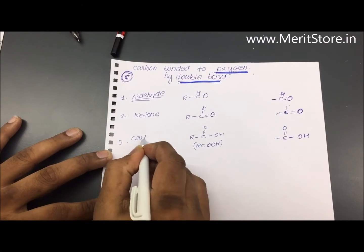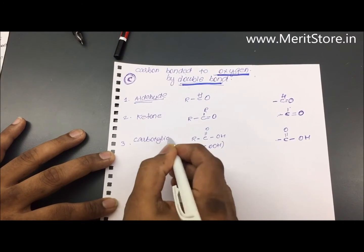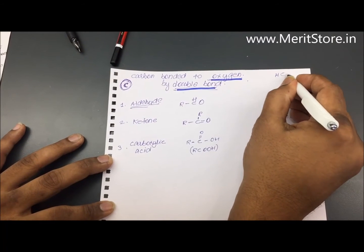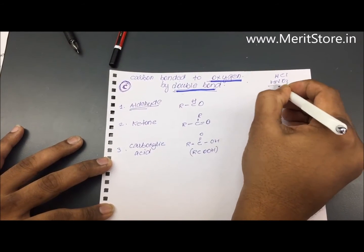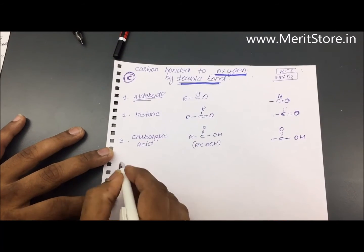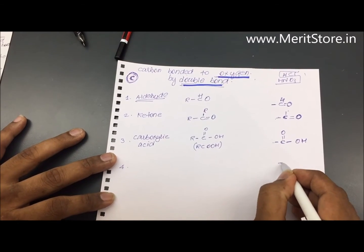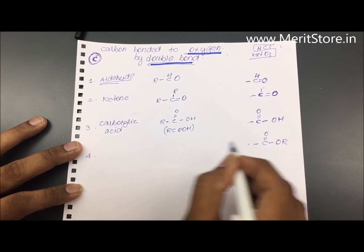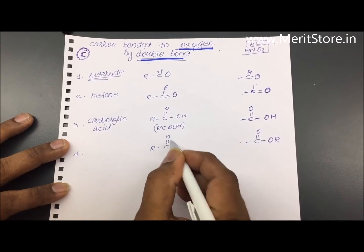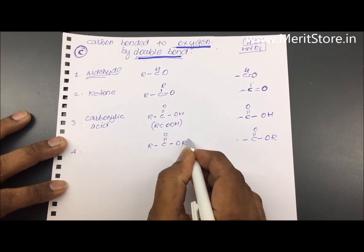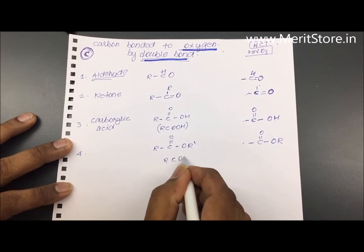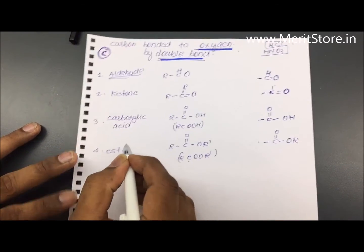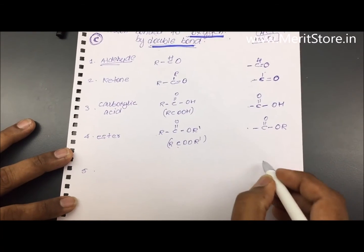We also have carboxylic acid alongside mineral acids. Mineral acids are acids like HCl, HNO3, etc. — those are inorganic acids, while carboxylic acid is an organic acid. The fourth category is C=O with another alkyl group on the other side — written as R-COO-R'. These are called esters.